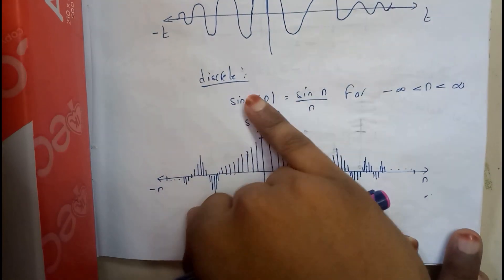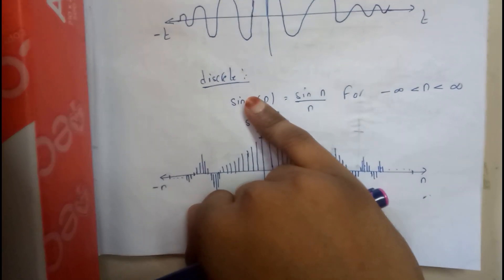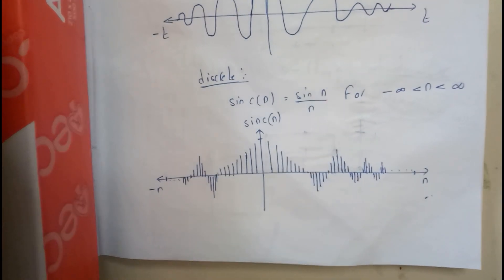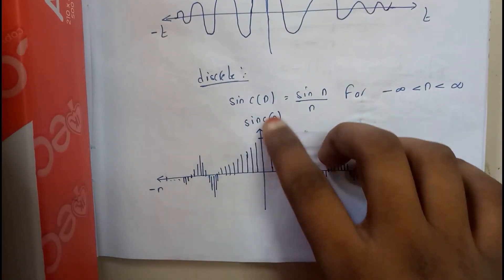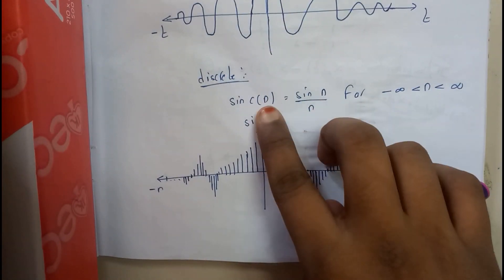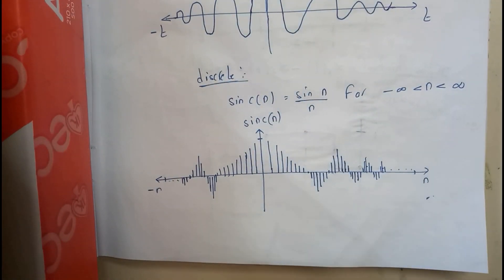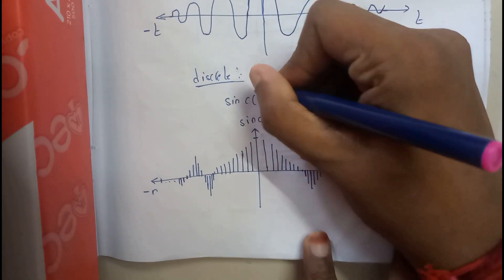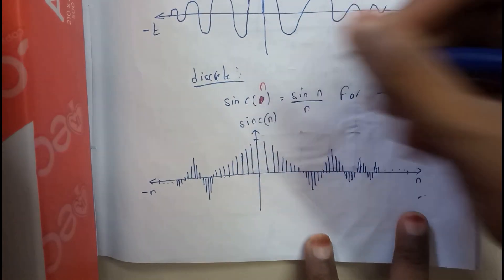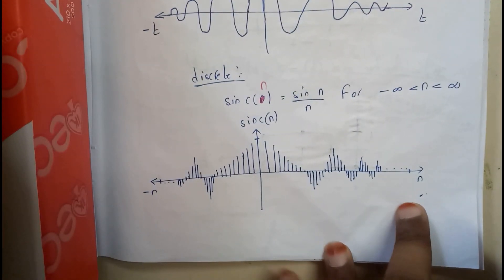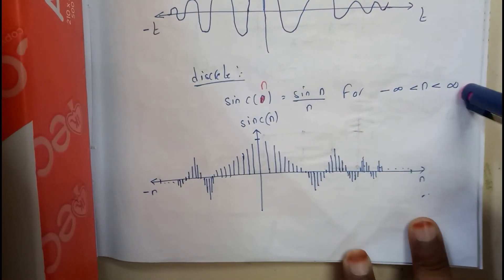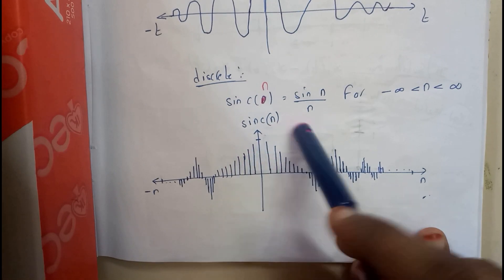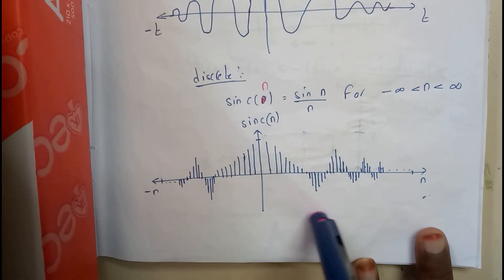Even in the discrete, in place of t we will be placing n — sinc of n is equal to sin n by n, from minus infinity to infinity. In the similar way you can just draw the graph for this.